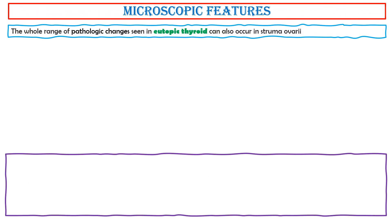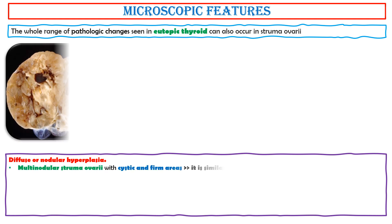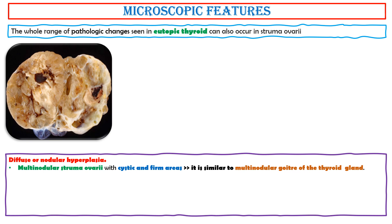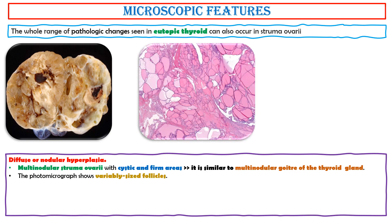The whole range of pathologic changes seen in eutopic thyroid can also occur in struma ovaryi. Diffuse or nodular hyperplasia: this photo shows a multinodular struma ovaryi with cystic and firm areas, similar to multinodular goitre of the thyroid gland. This photomicrograph shows variable-sized follicles. The follicles can be small, hypercellular, and compact with little or no colloid. Some nodules may show huge follicles lined by flattened epithelium containing large amounts of colloid.